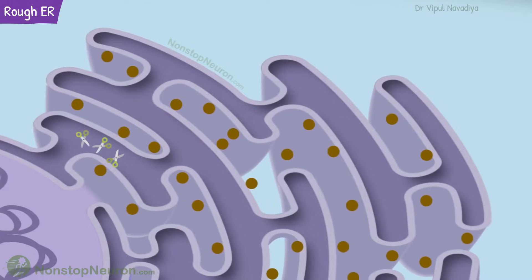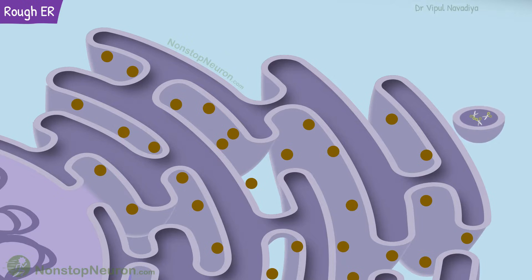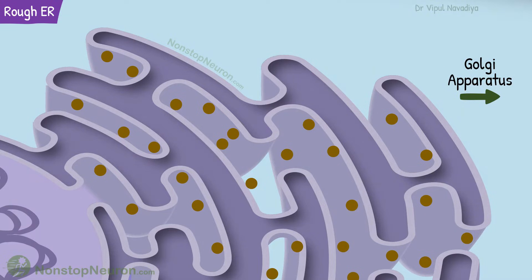The proteins to be exported are further modified inside the endoplasmic reticulum. Simultaneously, they travel towards the outer side of the network, where they are packed into tiny vesicles. These vesicles take the proteins to the Golgi apparatus, where they are further processed and sent to their final destination.